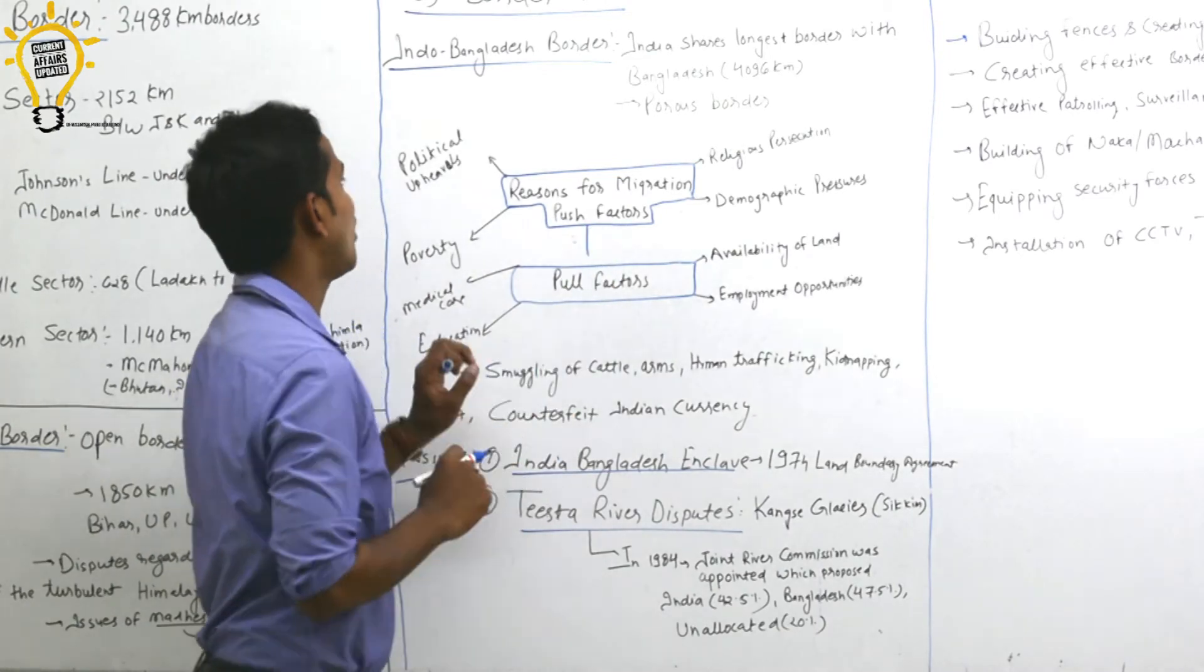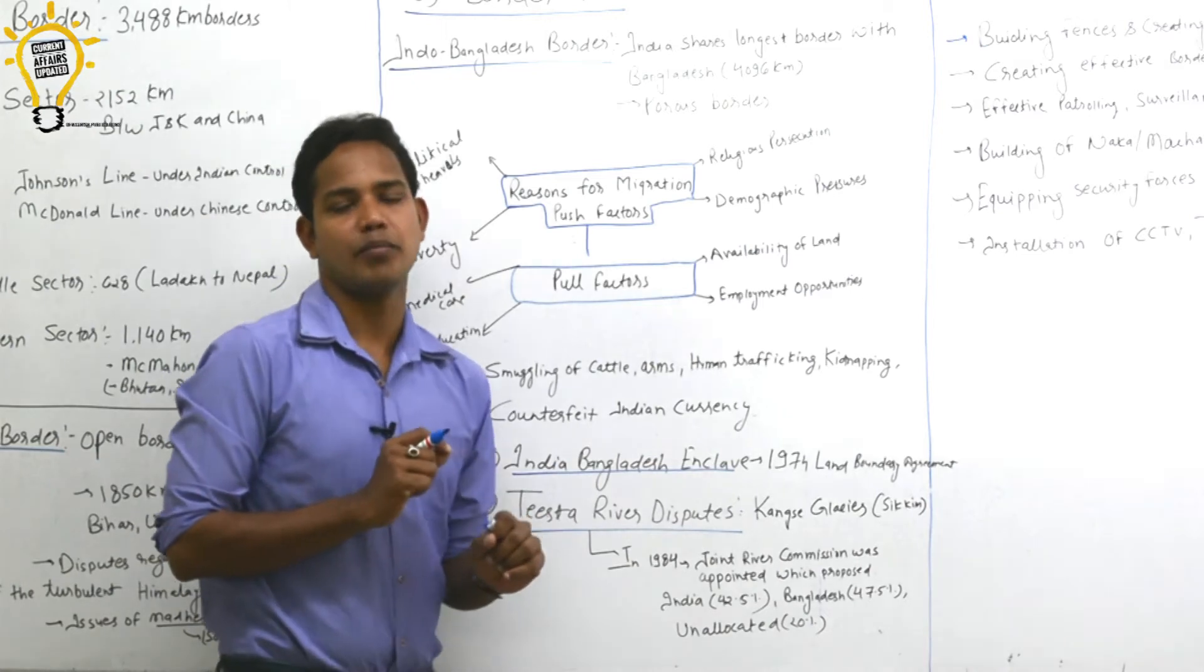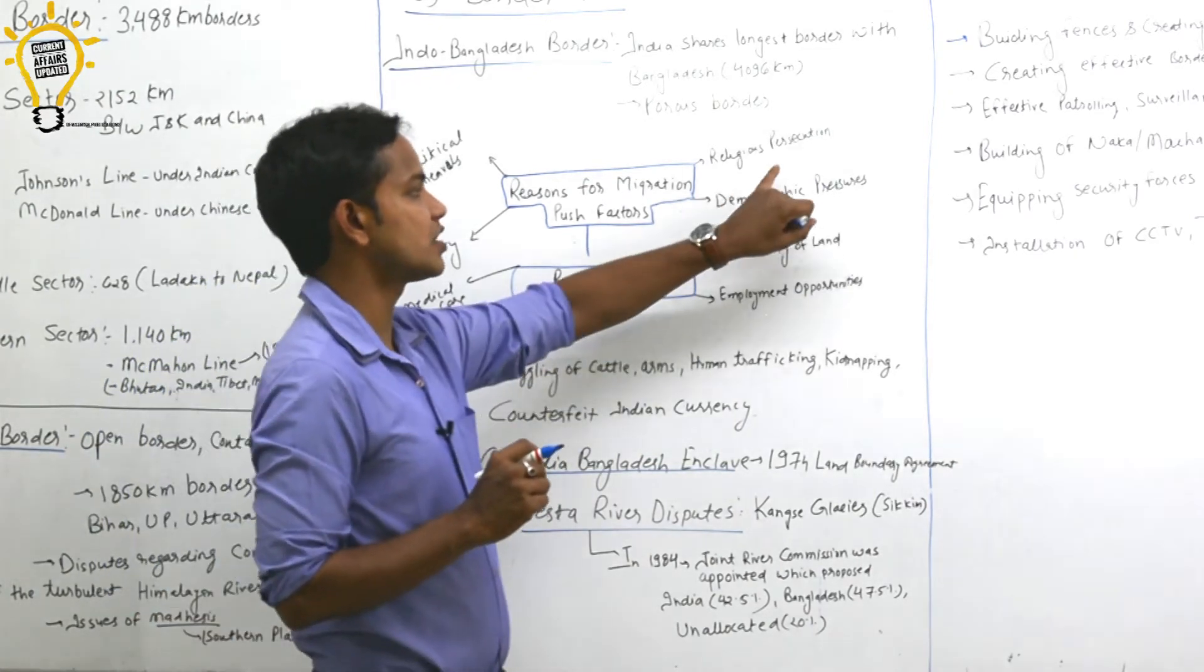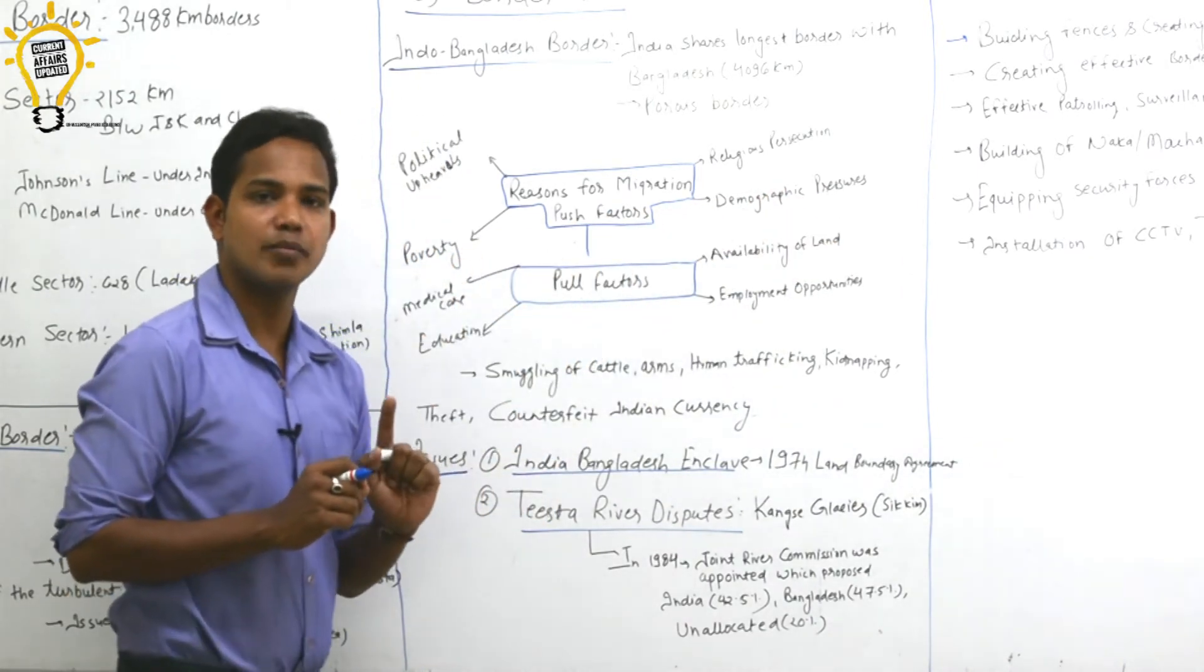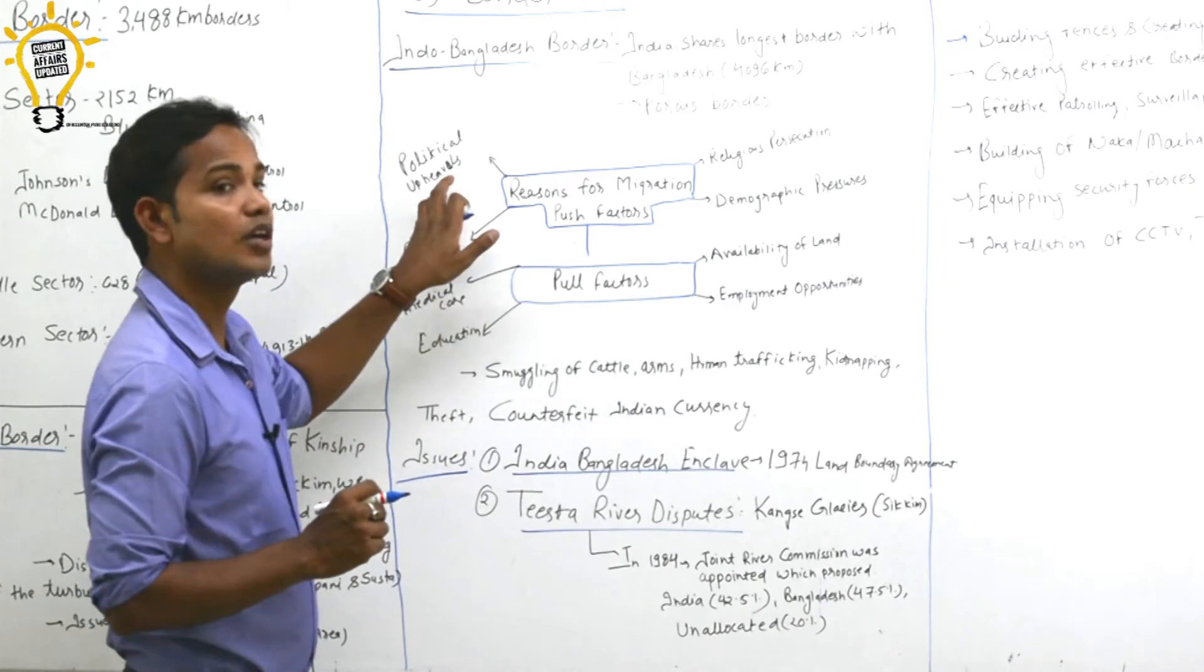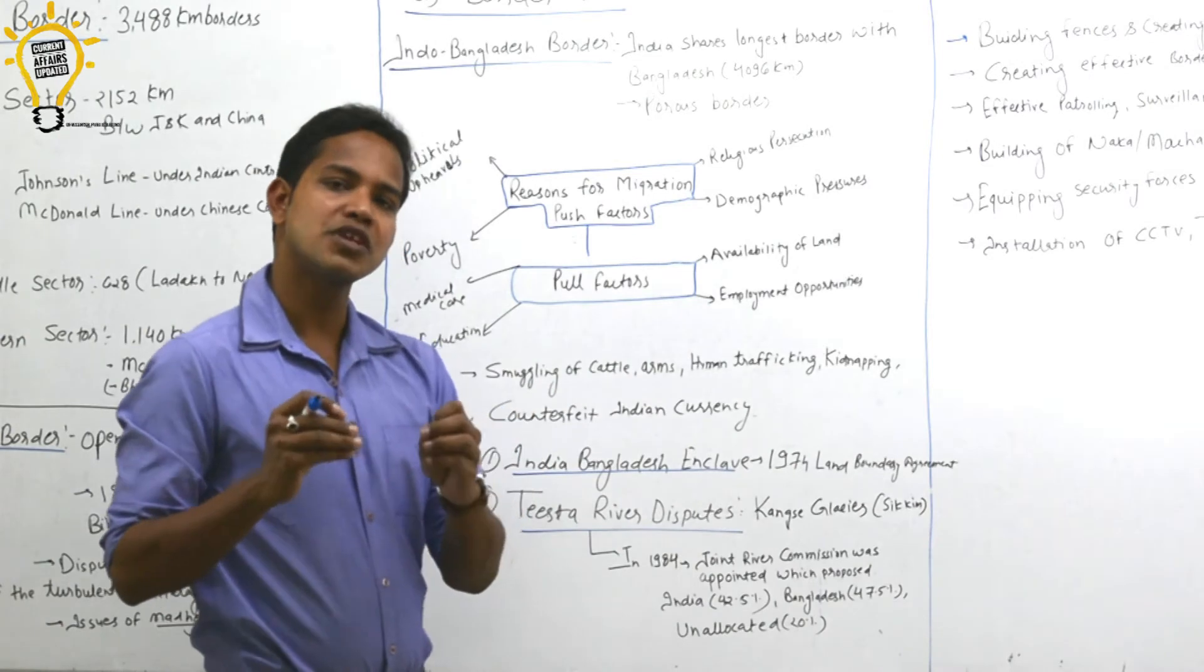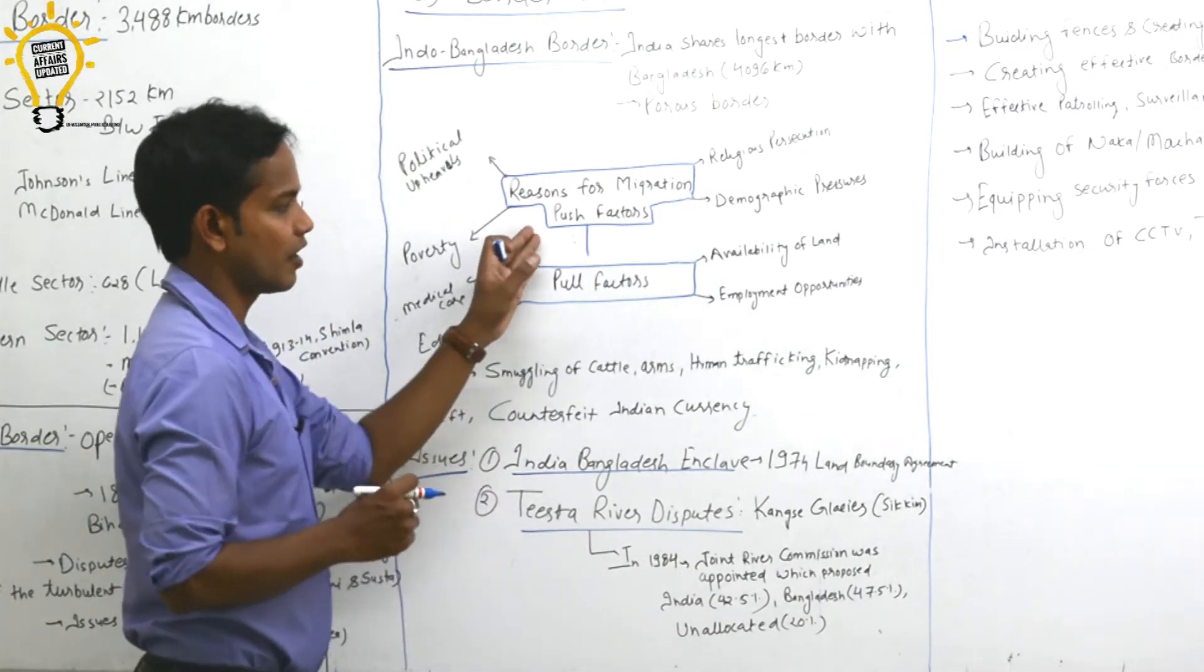Push factors we see: first is poverty, religious persecution happened a lot there, different communities were targeted. Demographic pressure is very high there. When population increases a lot, it causes issues. Political upheavals also - there was no stable government, so their easy option was to go toward northeast or toward India.